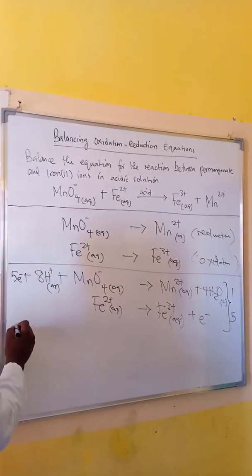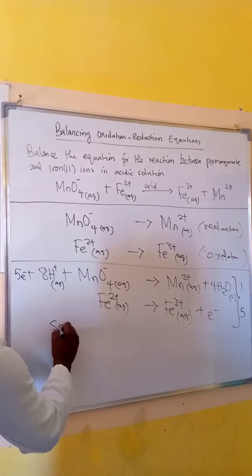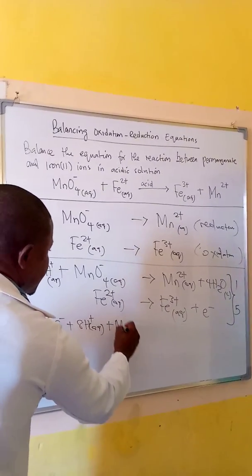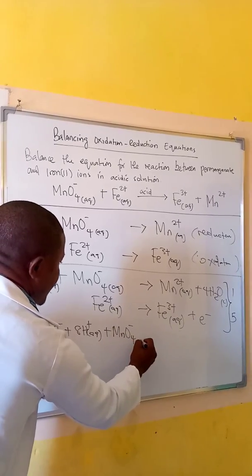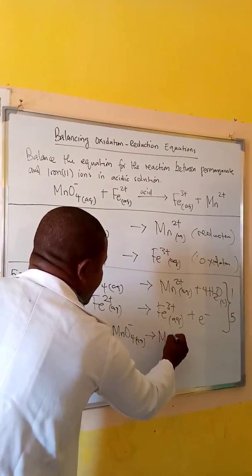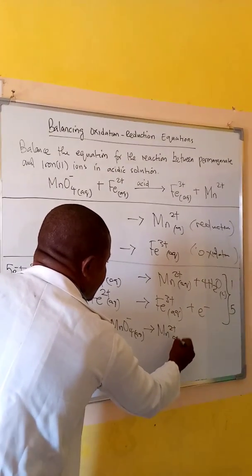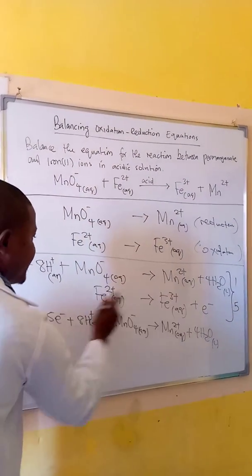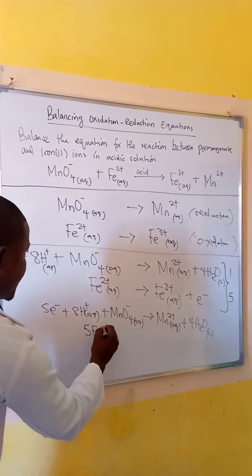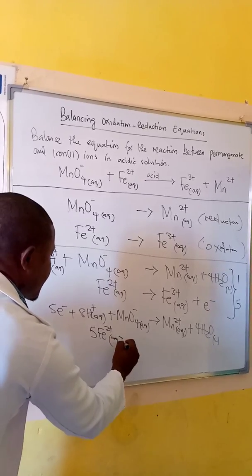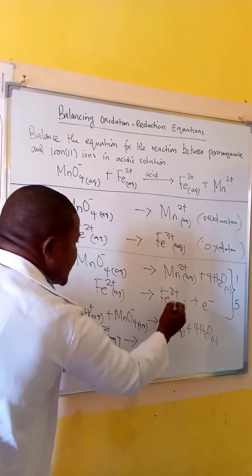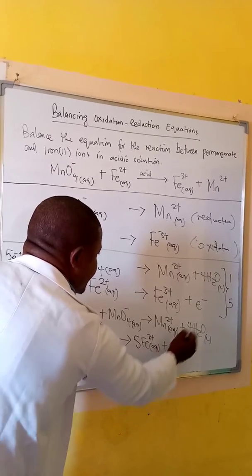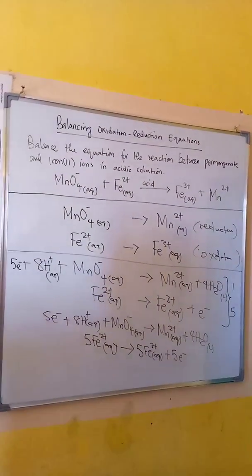The first (reduction) equation remains the same: five electrons plus eight H⁺(aq) plus MnO₄⁻(aq) forms Mn²⁺(aq) plus four H₂O. The oxidation half-reaction, multiplied by five, gives: five Fe²⁺(aq) forms five Fe³⁺(aq) plus five electrons.